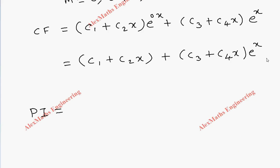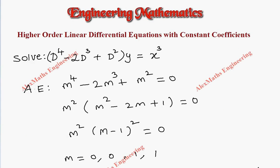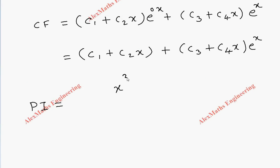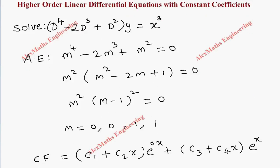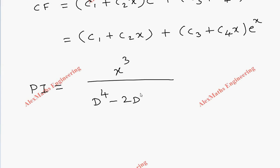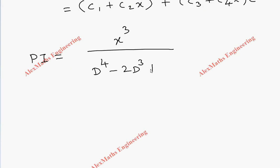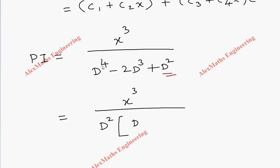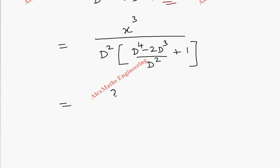Coming to the particular integral, the expression given is an algebraic expression x³. We write 1/(D⁴ - 2D³ + D²) acting on x³. We take D² common from the denominator, so we get (1/D²) · 1/(1 + (D² - 2D)) acting on x³.